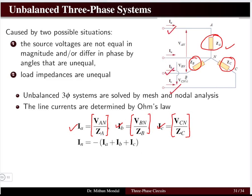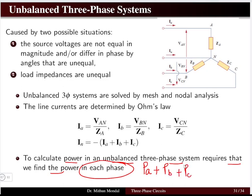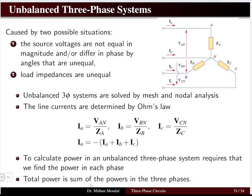Ia, Ib, and Ic are the currents flowing in the three phases. The neutral current is the negative of the summation of all the phase currents, so we have Ia plus Ib plus Ic. To calculate the total power in an unbalanced three-phase system, we find the power in each phase separately — power in phase A, plus power in phase B, plus power in phase C — and then sum them to get the total power.